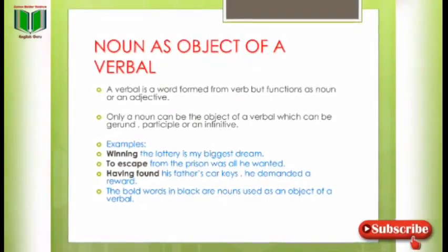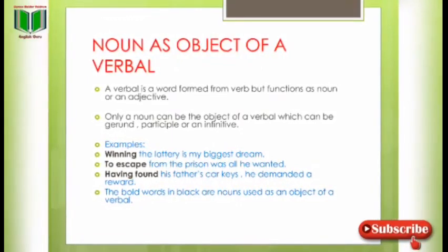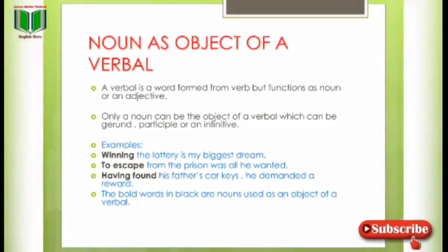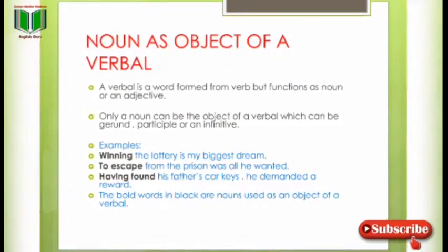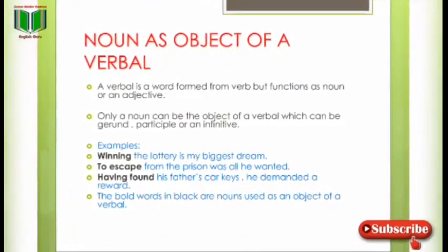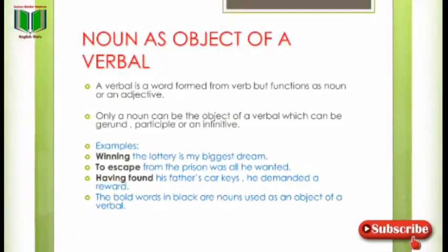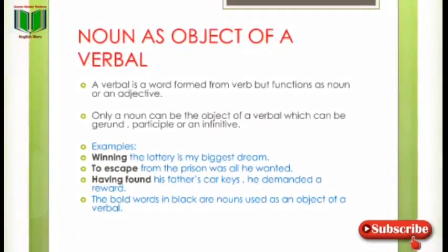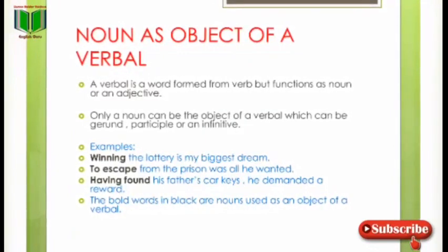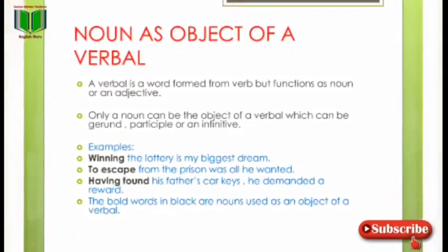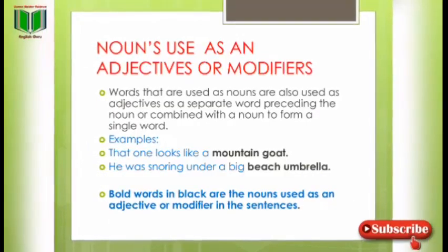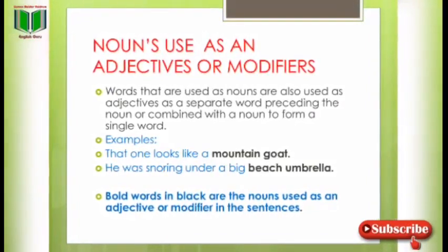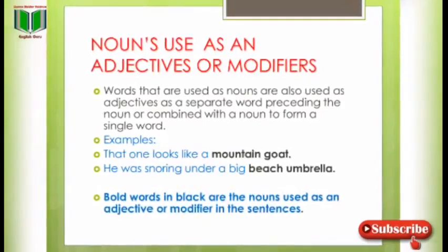Noun as object of a verbal — a verbal is a word formed from a verb but functions as a noun or adjective. Only a noun can be the object of a verbal, which can be a gerund, participle, or an infinitive. Examples: 'Winning the lottery is my biggest dream.' 'To escape from the prison was all he wanted.' 'Having found his father's car keys, he demanded a reward.' Gerund، participle اور infinitive سب verb forms ہیں جو آگے پڑھیں گے۔